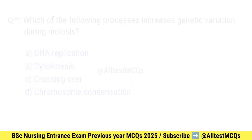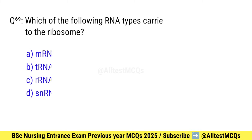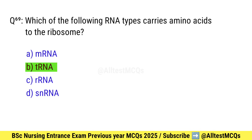Question number 69. Which type of RNA carries amino acids to the ribosome? Right option is B: tRNA.